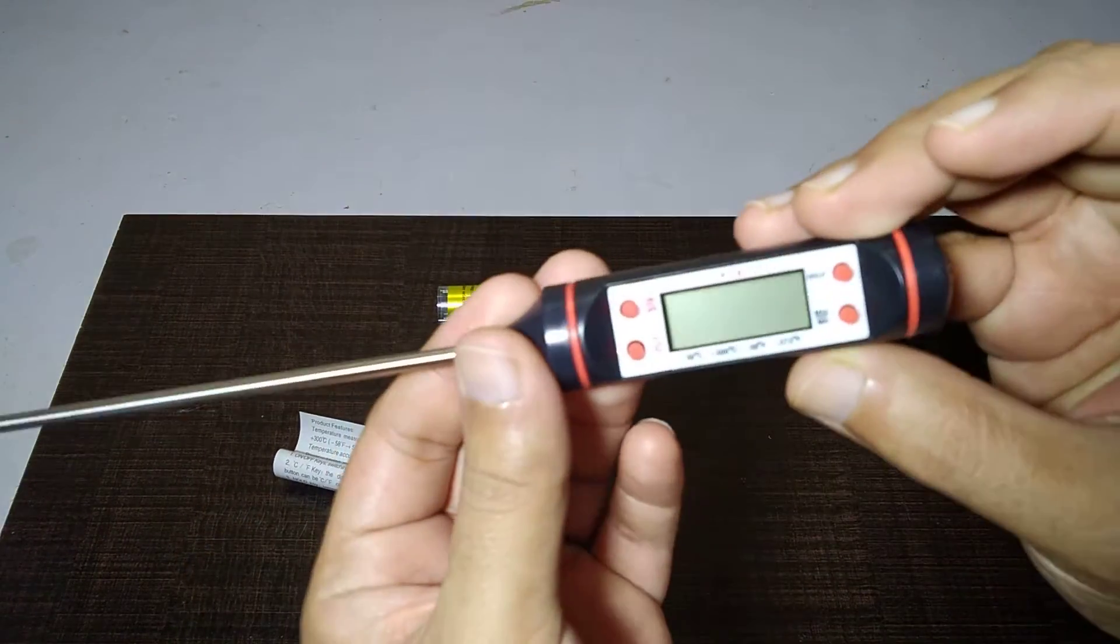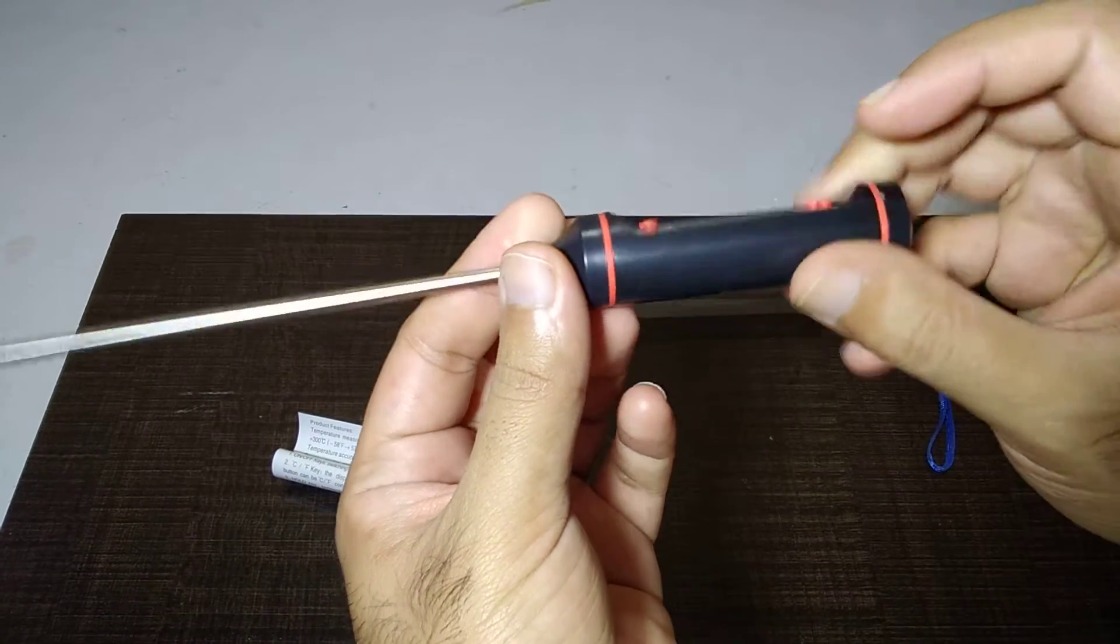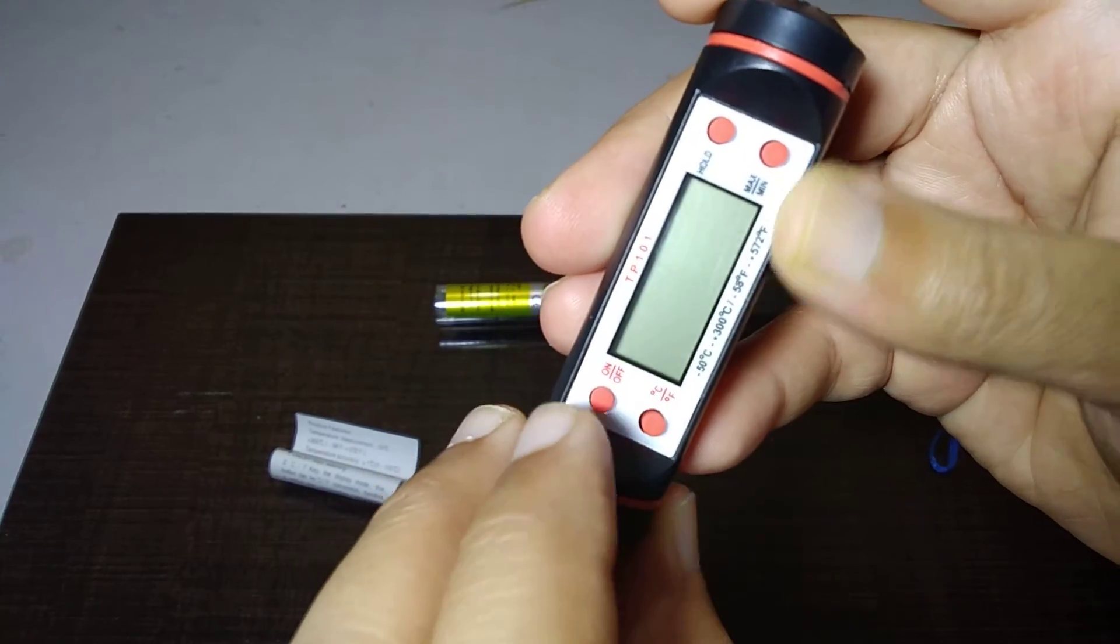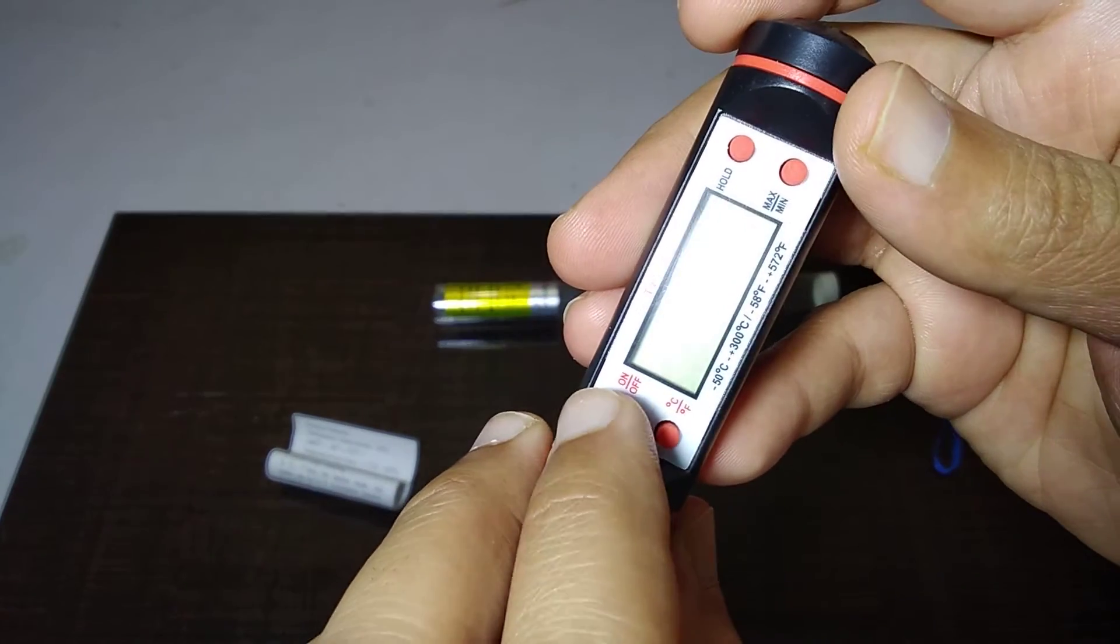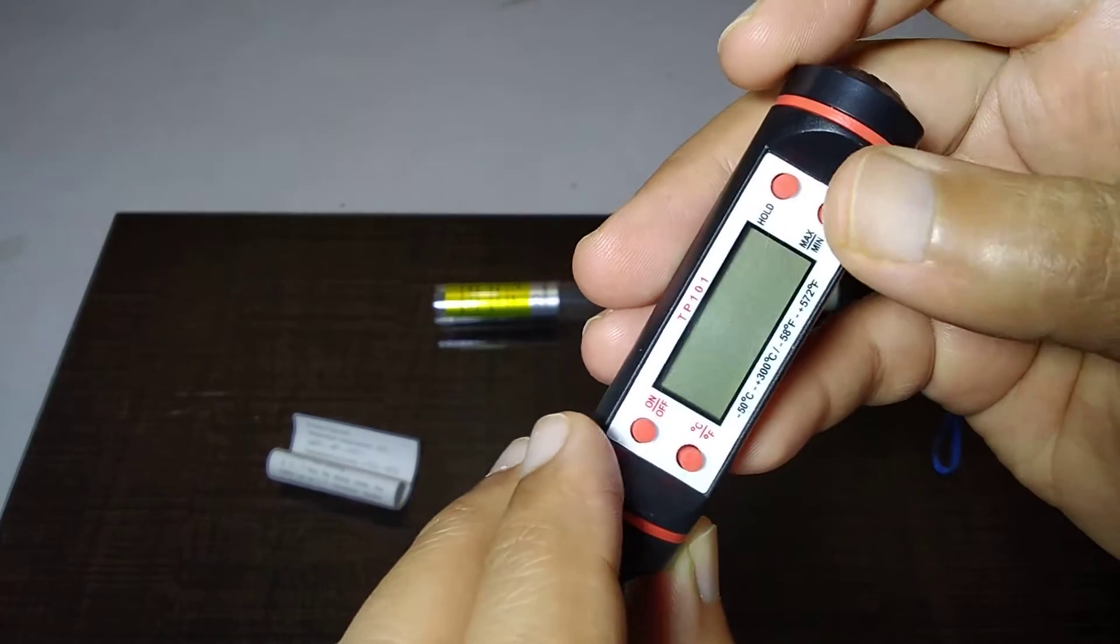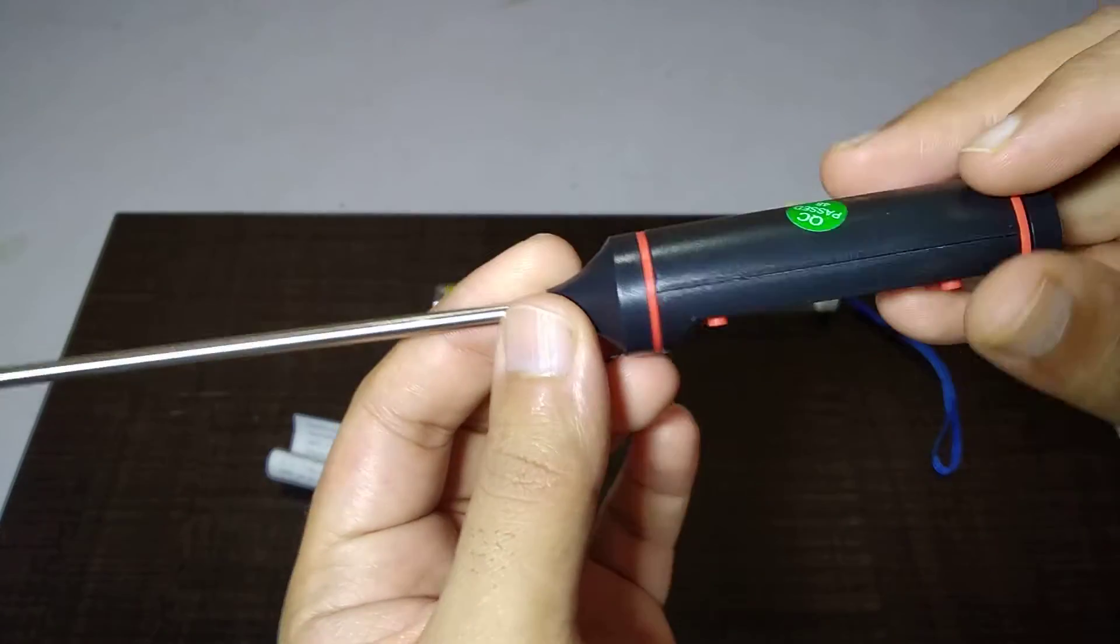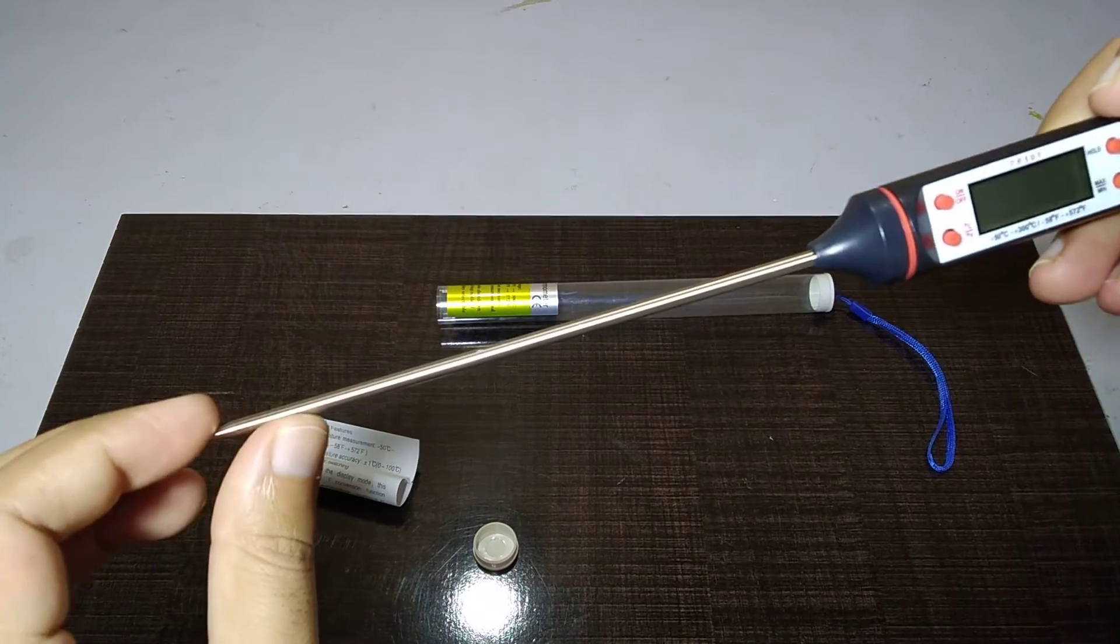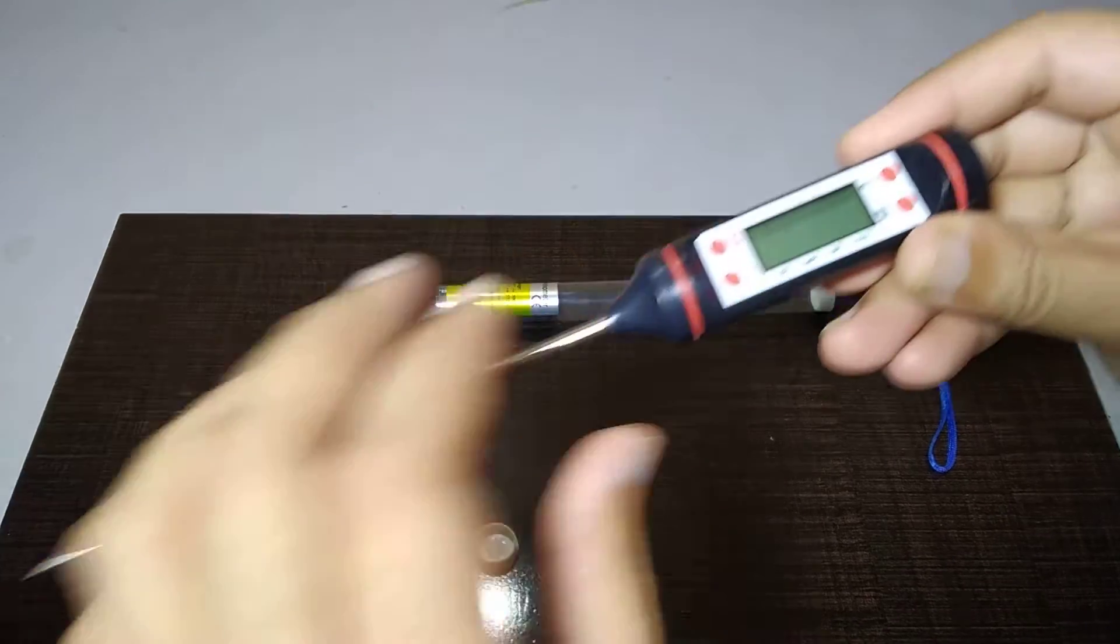This is the TP101 thermometer. It has four buttons: max/min, on/off, Celsius/Fahrenheit, and hold. And we have this tip which is the sensor tip - the whole tip is a sensor.